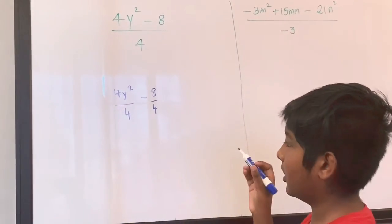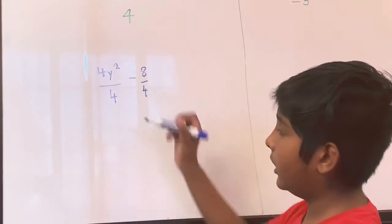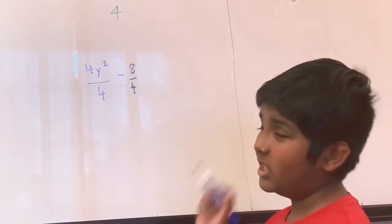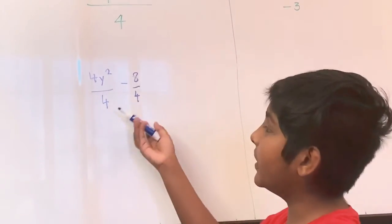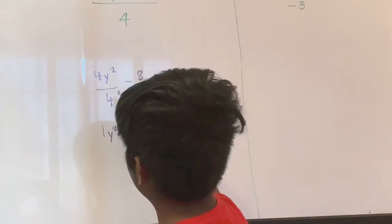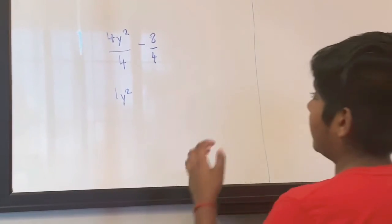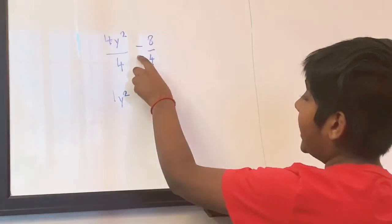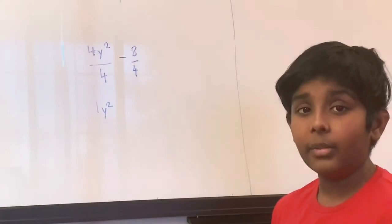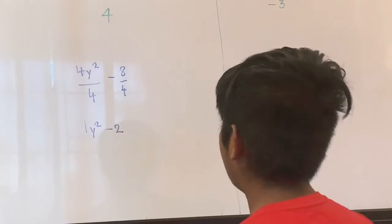4y squared over 4 — let's divide the numbers first. Positive 4 divided by positive 4: that's going to be positive 1, because we're dividing a positive by a positive, and 4 divided by 4 is 1. So positive 1y squared. Then 8 over 4 is 2, but we're dividing a negative by a positive, so our answer is negative 2. So our answer is 1y squared minus 2.